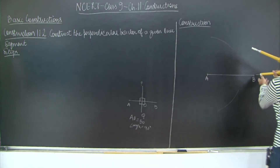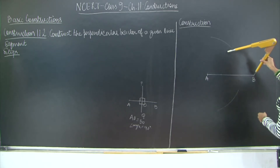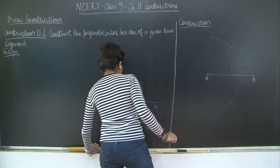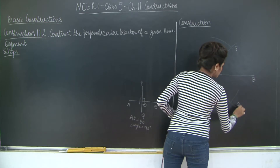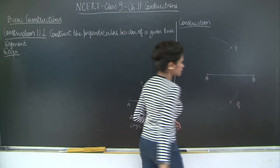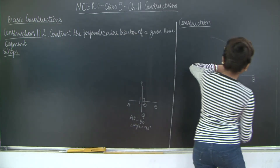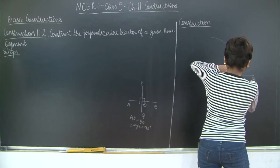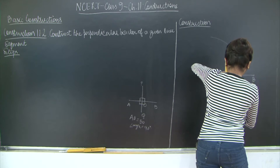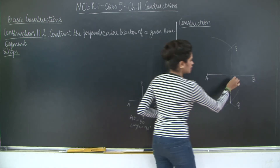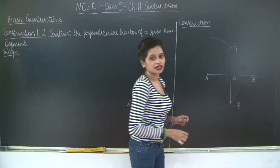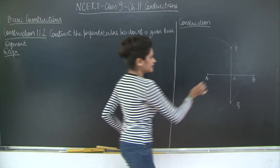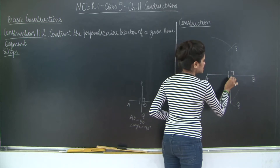Once done, come to point B. Same length — you are not changing the length. Cut an arc here and cut an arc here. You will notice that both arcs will intersect each other. Call the points of intersection as P and Q. Now join PQ. PQ bisects AB; call the point of intersection as O. If you measure AO and OB, each length is equal, and each of these angles is 90 degrees.